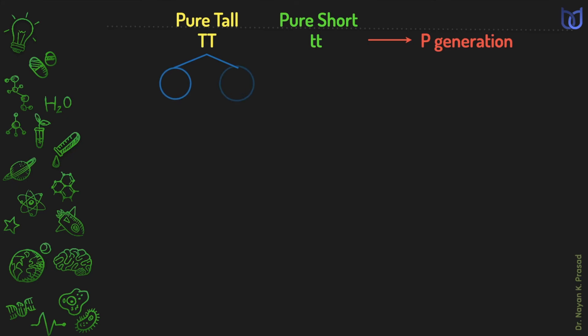So capital T and capital T separated in tall individual. Similarly, in short individual, small t and small t separated. And during fertilization, if capital T unites with small t of short individual, then capital T and small t will come together. So if another one unites with small t then again, the similar combination is seen.